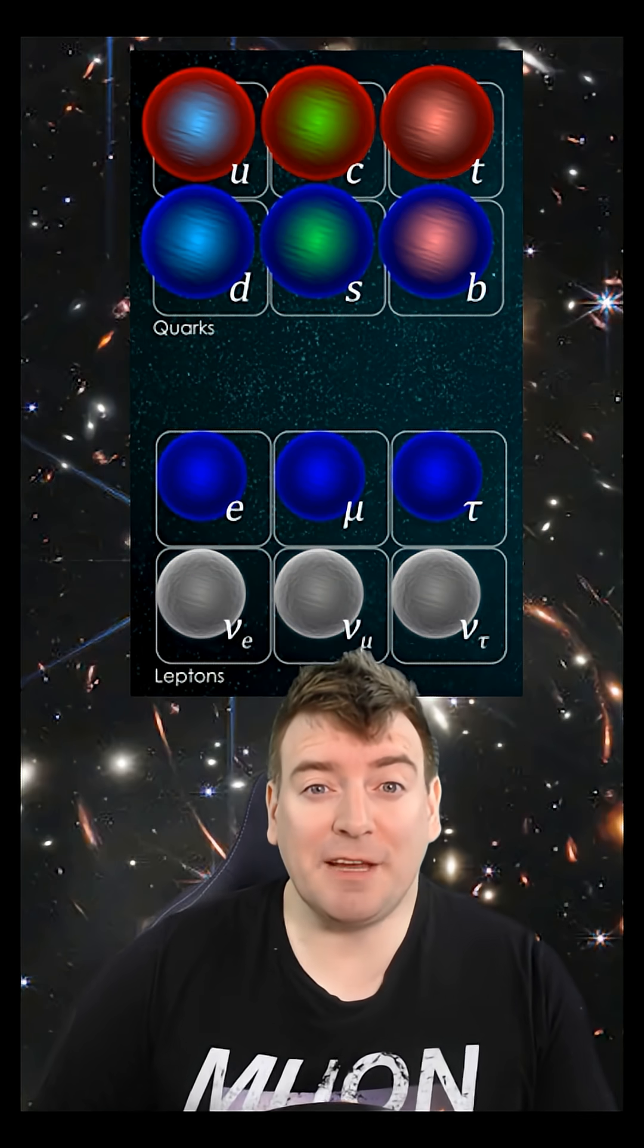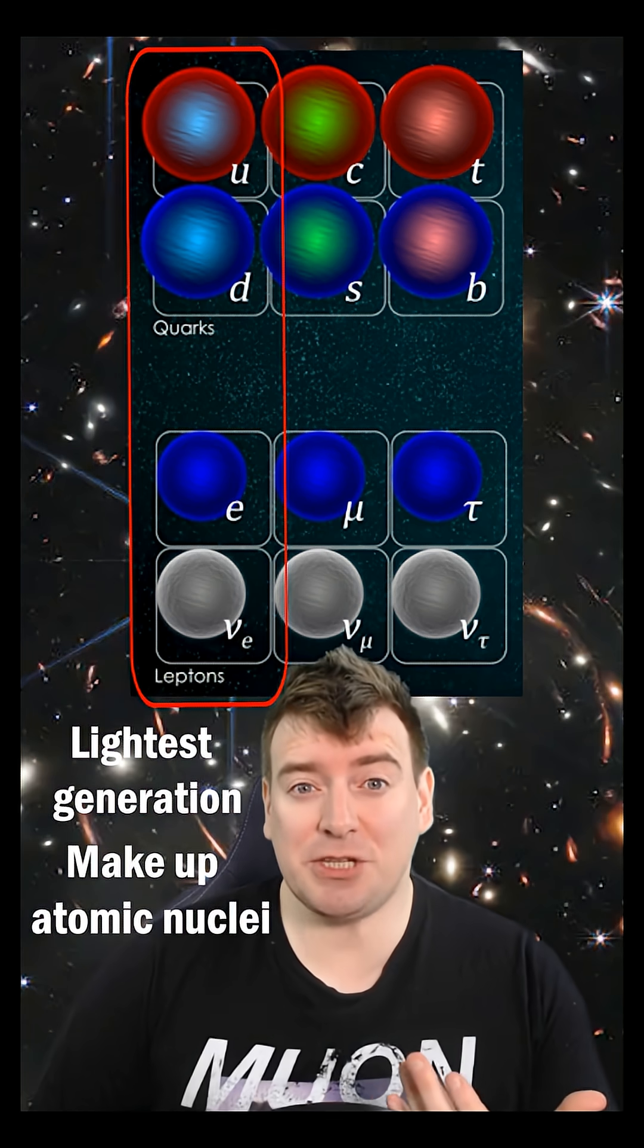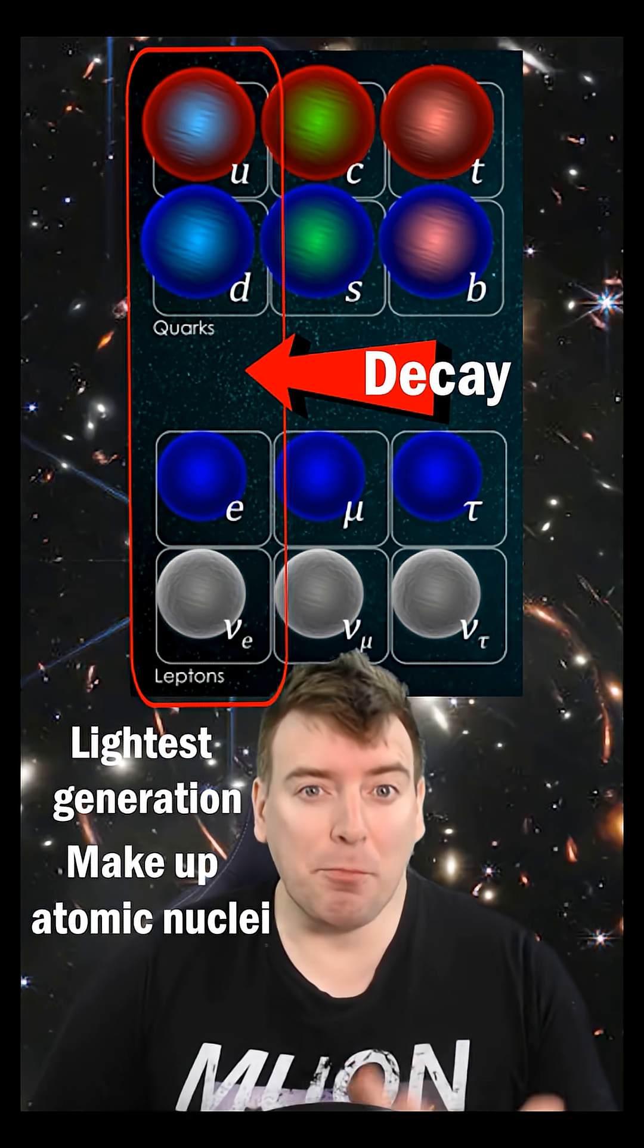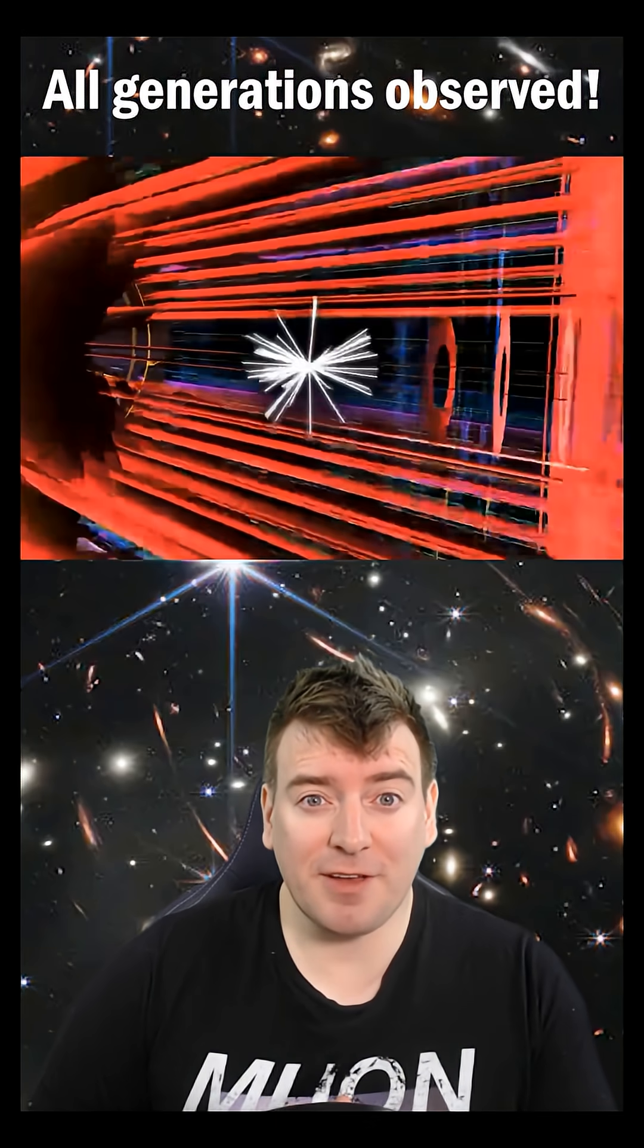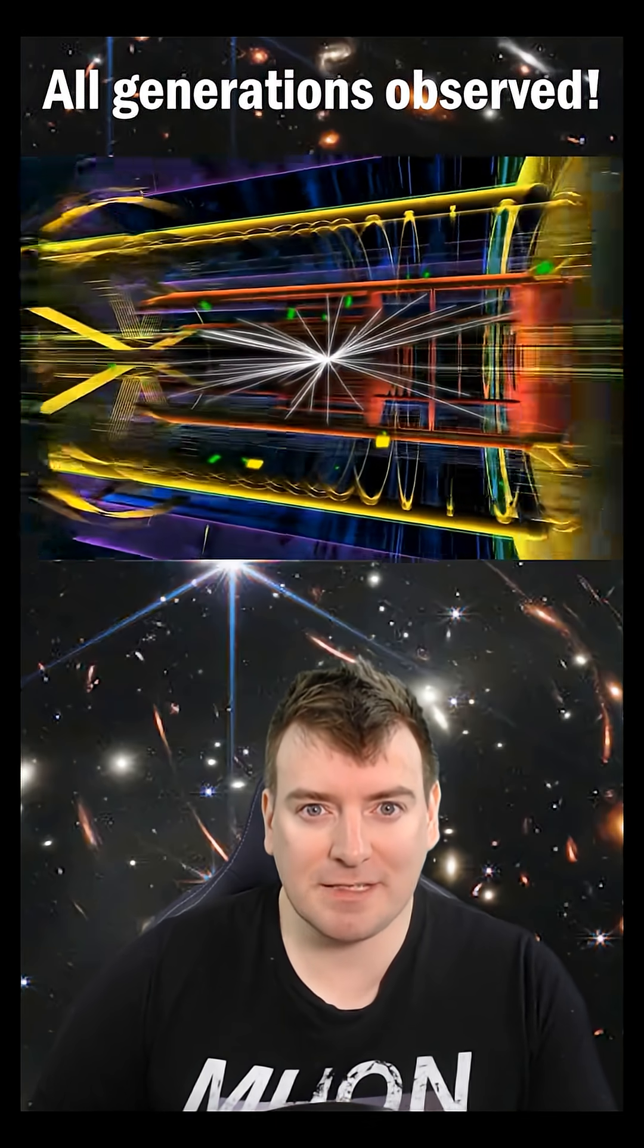Usually we only think of the lightest generation, as the heavier generations decay away to give more particles in the lightest generation. But all of these copies of particles have been observed at high-energy particle colliders.